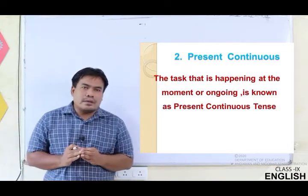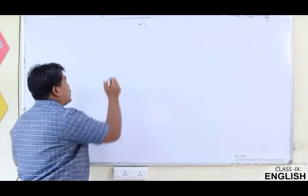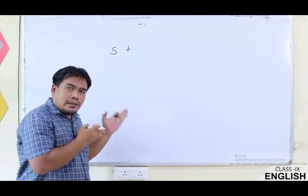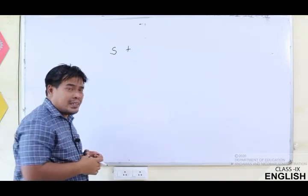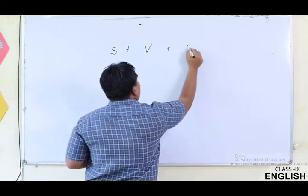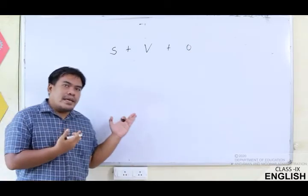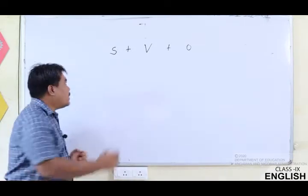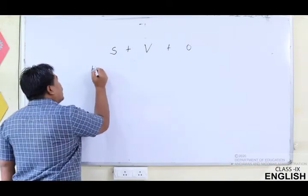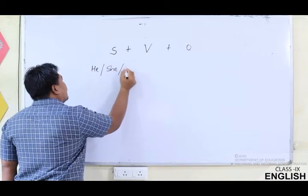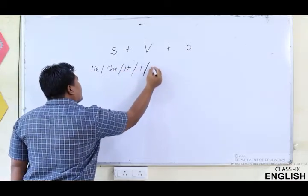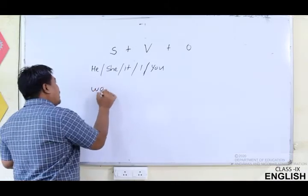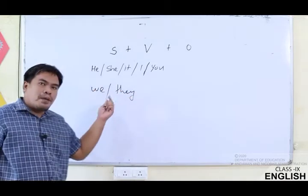If we talk in terms of subject — do you remember what a subject is? The singular number and the plural numbers are actually called or considered the subject. Verb plus object — this is actually the criteria, or you could say the systematic way it has to be formed. Subject means the singular or plural number. He, she, it, and I, you, they — these are the singular numbers, and we, they — these are actually the plural numbers.